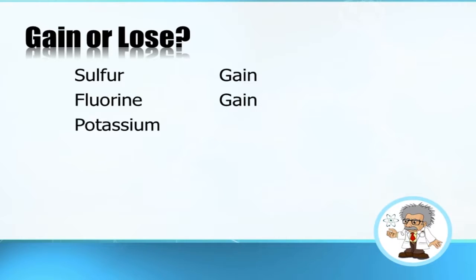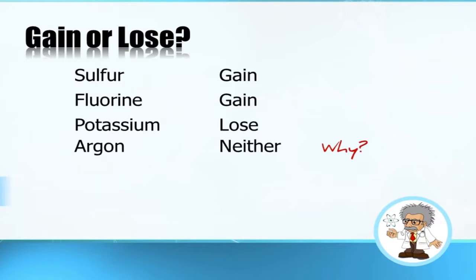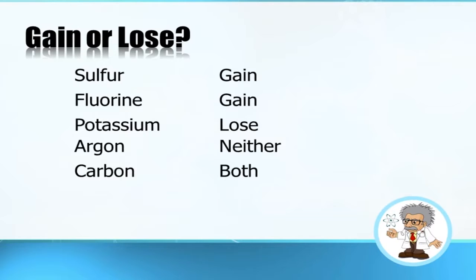Potassium, number 19, on the left-hand side — it's going to be easier to lose one than to gain seven. Argon: neither, because argon is a noble gas. Carbon: it could go both ways — it could gain four or lose four, depending on what it's bonding with. If bonding with a metal, carbon is likely gaining; if bonding with a non-metal, it's likely losing. This relates to electronegativity, which we'll cover in another lesson.